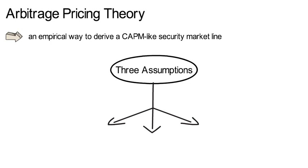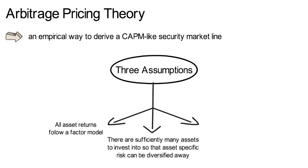Assumption 1: all asset returns follow a linear factor model. Assumption 2: there are sufficiently many assets to invest in such that asset-specific risk can be diversified away. Assumption 3: asset markets are arbitrage-free.